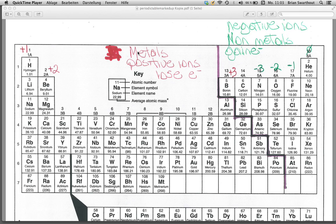I also wrote on my periodic table, for reference, 'metals' on the left-hand side, because they tend to form positive ions since they lose electrons — you could also write 'cations.' On the right-hand side I wrote 'non-metals,' because they form negative ions since they gain electrons — you could also write 'anions.' You should have all this written down for reference when you work on problems, and then you'll learn the material without needing it written there.